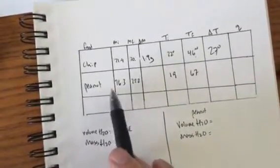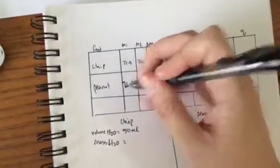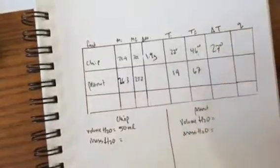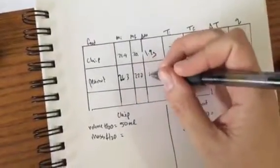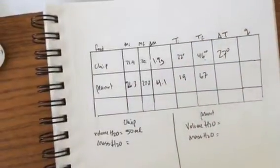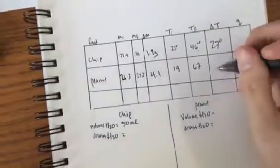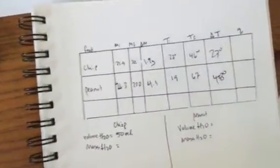Let's say you also burned a peanut and you found you started with 26.3 grams of peanut, or the mass of the holder and the food. You ended up with 22.2 grams for the final mass, so your change in mass was 4.1. Your temperature went from 19 to 67, so it was 48 degrees in difference.